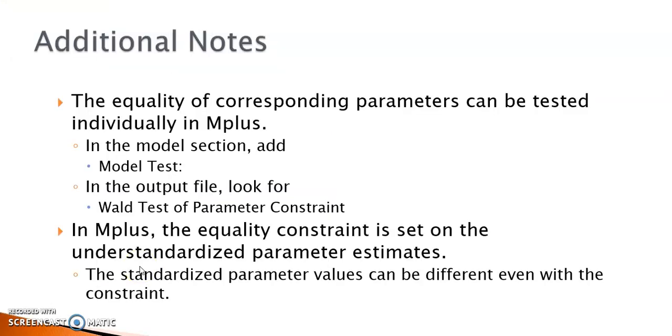The second note is just a reminder. In Mplus, the equality constraint is set on the unstandardized parameter values. The standardized estimates can still have different values for those groups even when the equality constraint is enforced.